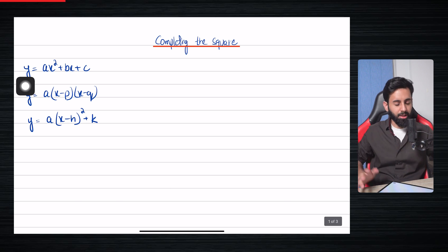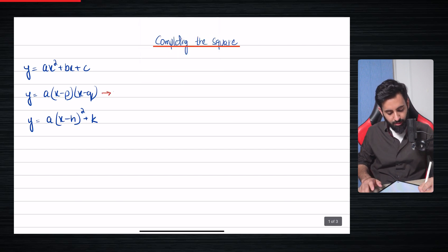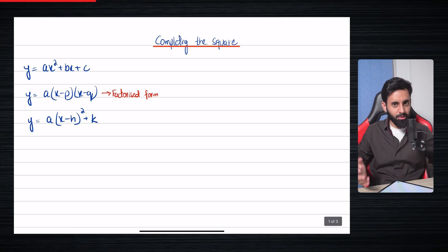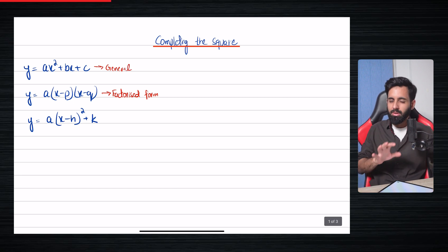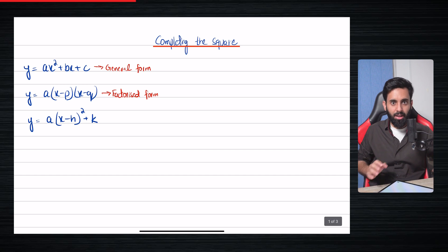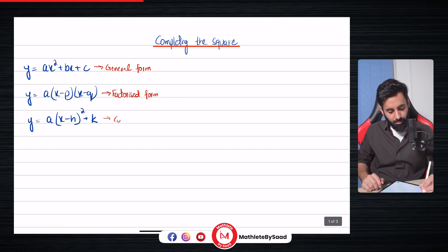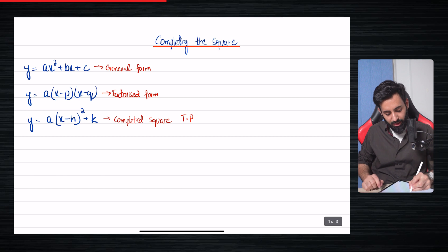There are three forms in which a quadratic equation can be written. This is the general form — the form that we are most used to. This is what we call the factorized form. Every form has its own benefits, its own pros and cons. The general form is useful if you have to use the quadratic formula, so you can see the values of A, B, and C clearly, or if you're doing middle-term breaking. And then there is the completed square form, which is particularly useful if you have to find out the turning point. In the completed square form, you have H and K as the coordinates of the turning point.